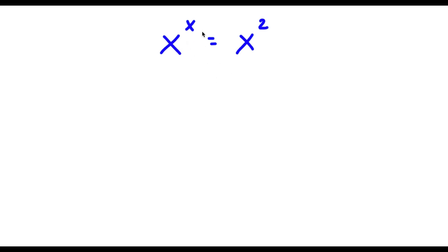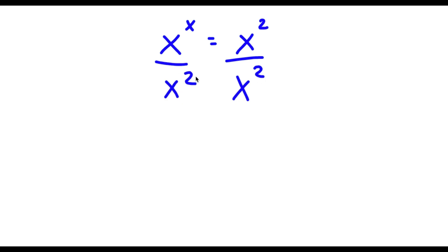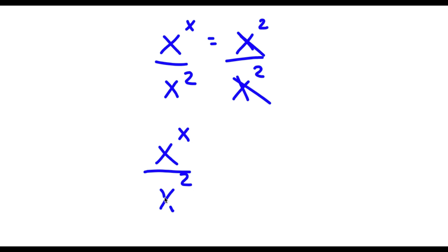Alright, so I have x to the power of x is equal to x to the power of 2. The first thing I'm going to do is divide both sides by x to the power of 2. So these two are going to cancel out and now I'm going to be left with x to the power of x over x to the power of 2 is equal to 1.